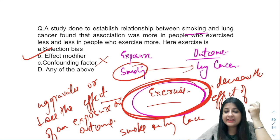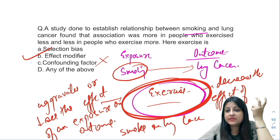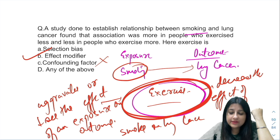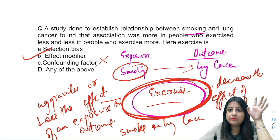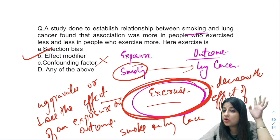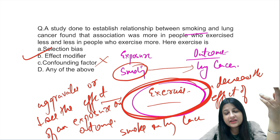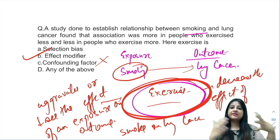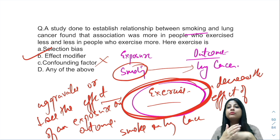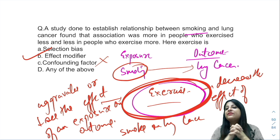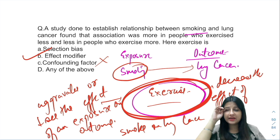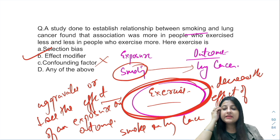That is why exercise is an effect modifier — because it was not fulfilling the criteria of a confounder. You just have to see: is the third variable common to both exposure and outcome? If not, then check whether it is increasing or decreasing the effect of the exposure on the outcome. In both cases, it becomes an effect modifier.